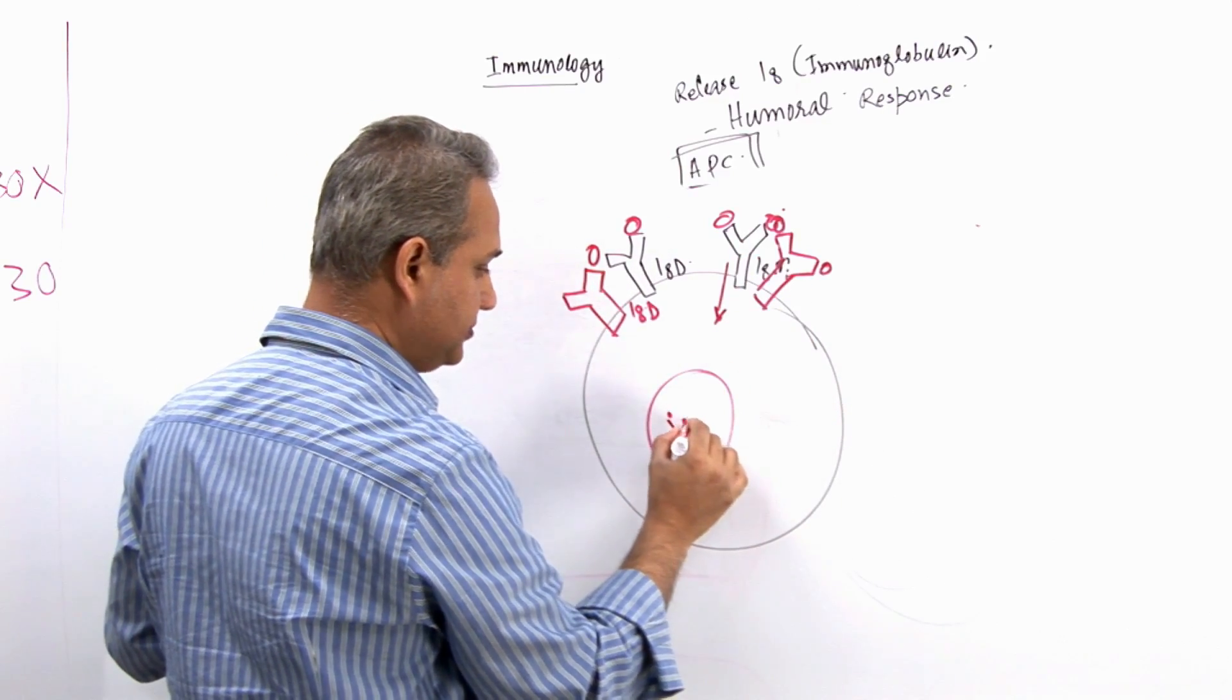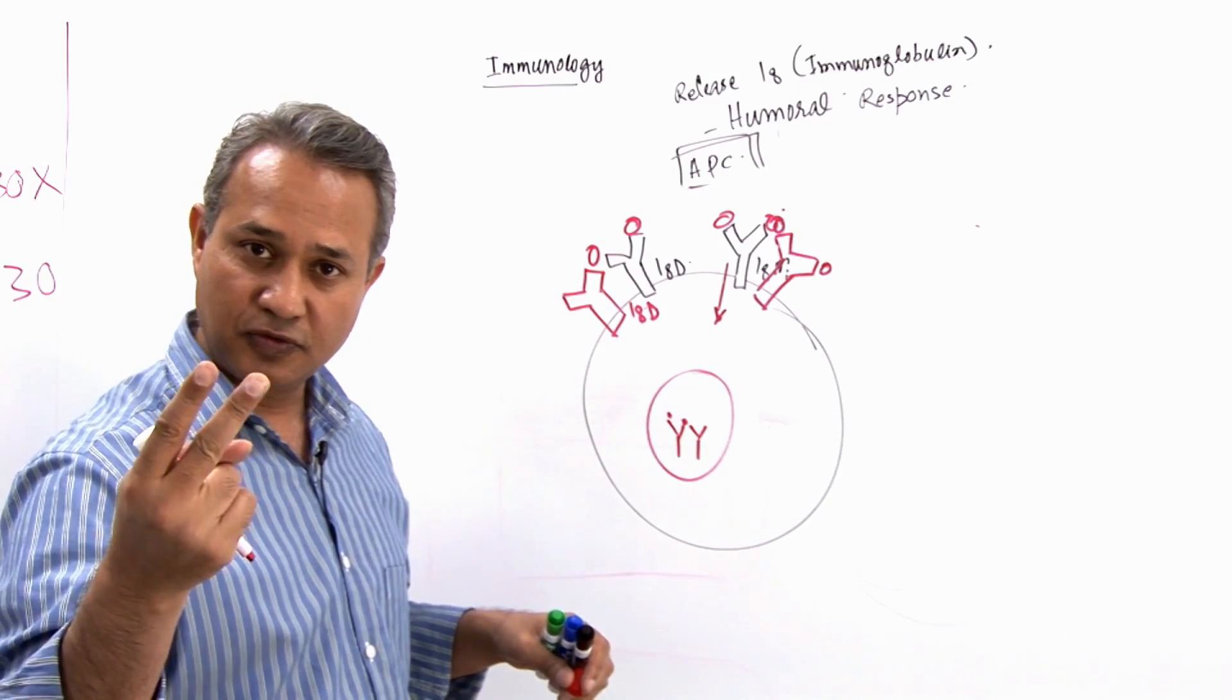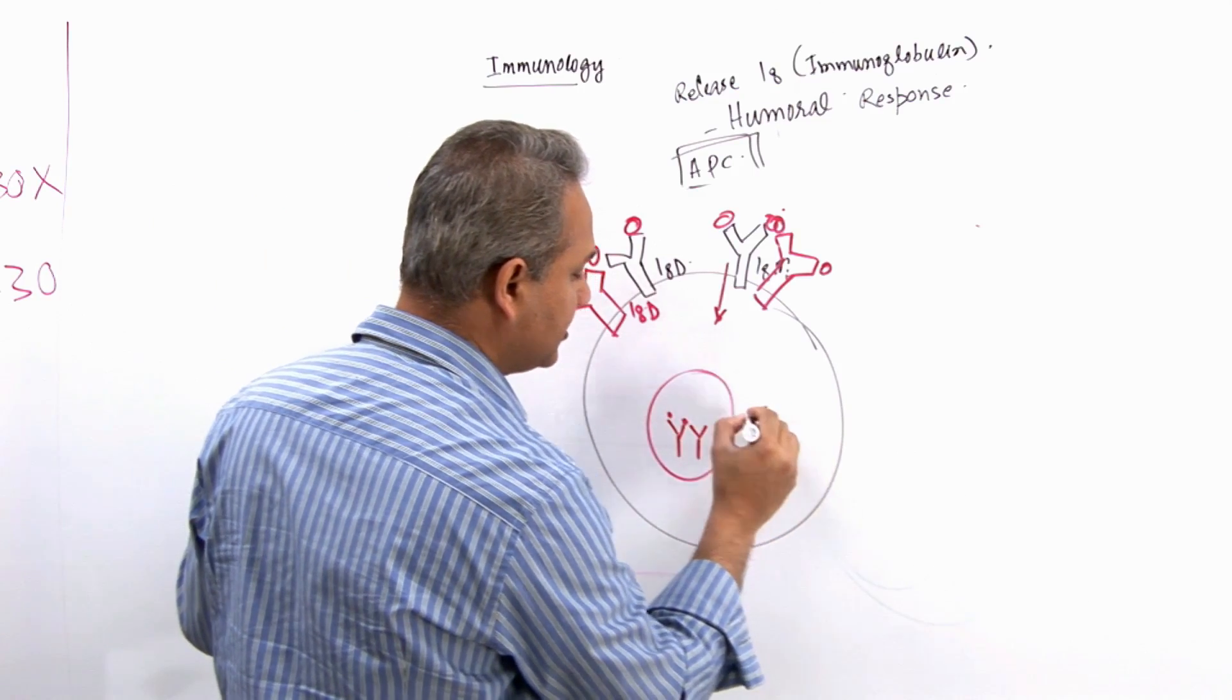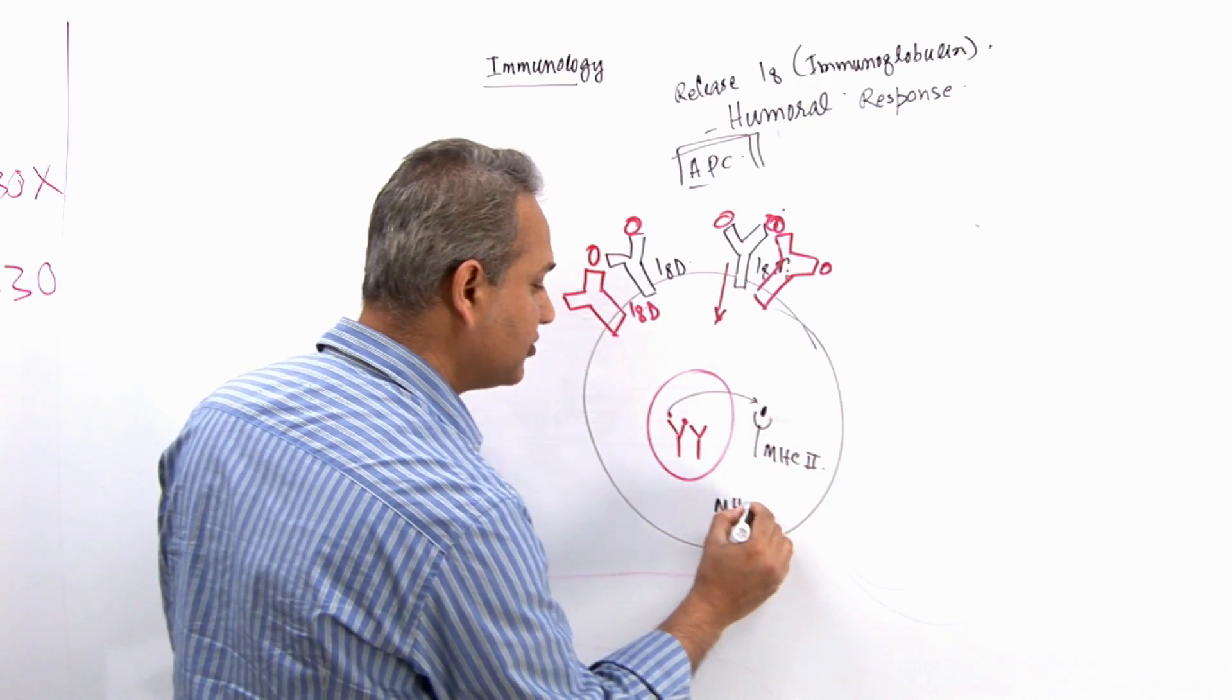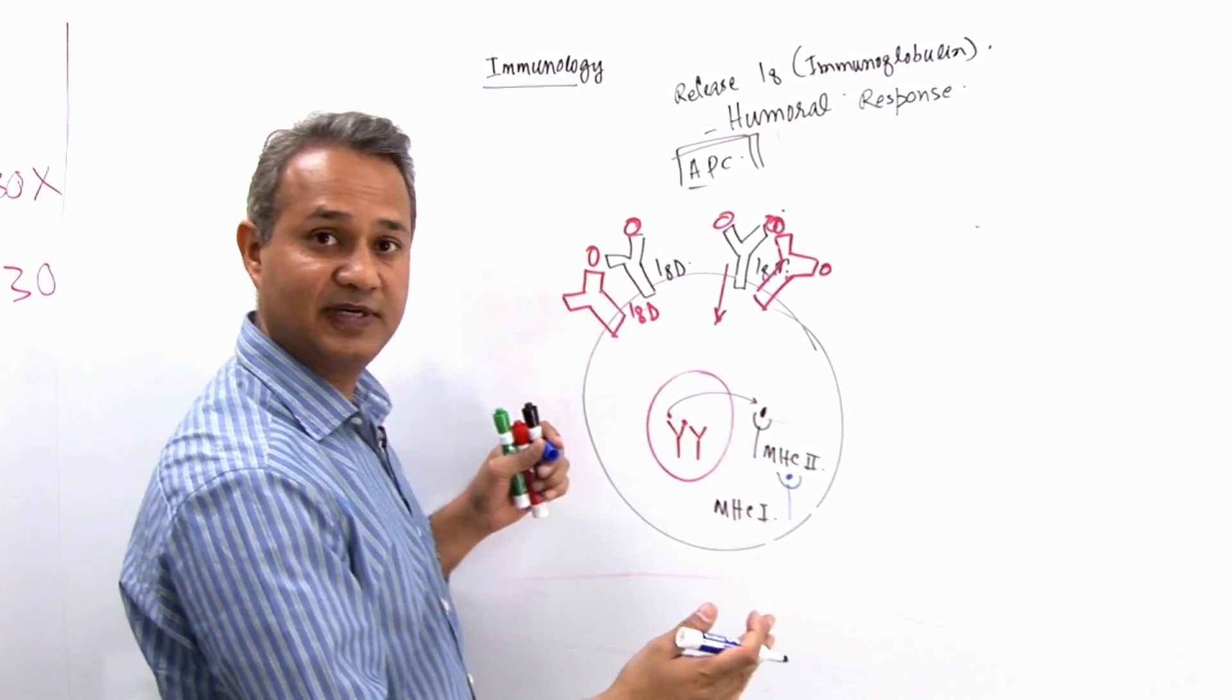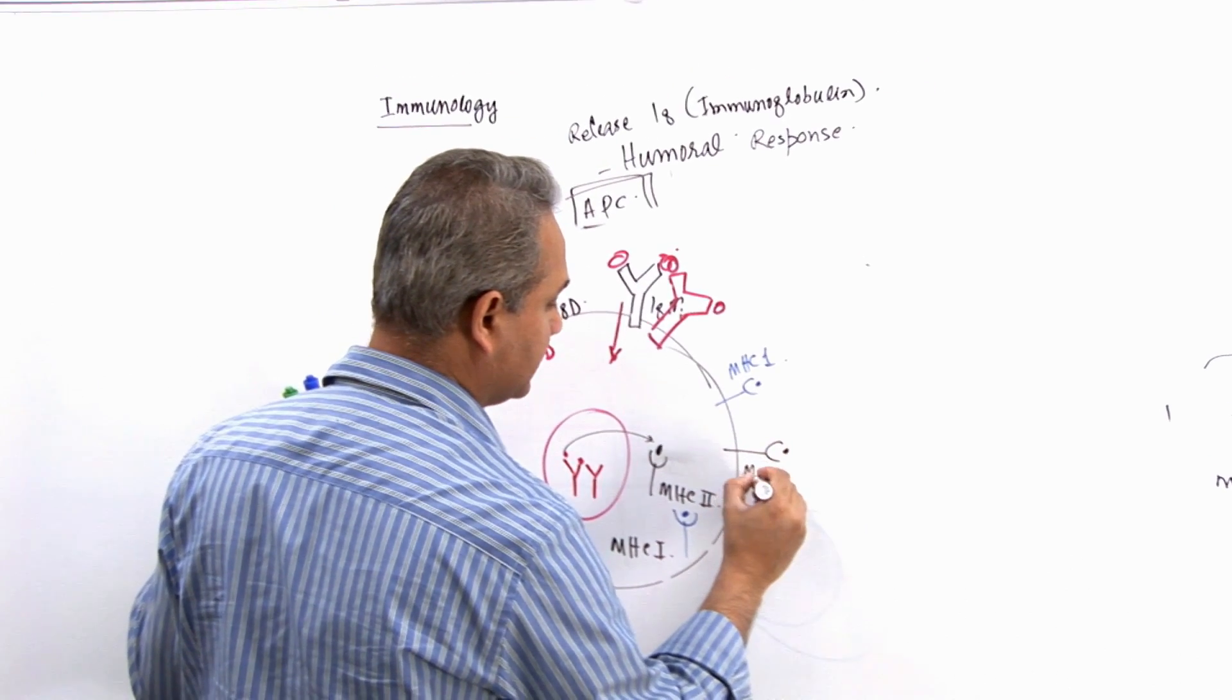Then what happens is B-cell would internalize them. Remember these are recycled. So these antigens with the antibodies, immunoglobulins, will be internalized. They are taken in here. These antigens, the pathogen, will be processed and transferred on MHC2. Remember this is an APC cell. So this will be the antigen from here finally transferred on MHC2. Of course it would also be transferred on MHC1 because it is a nucleated cell. There is MHC1 and the MHC1 would have the antigen on it as well. Now what we got: we got MHC1 expressing the antigen, we also got MHC2 expressing the antigen.